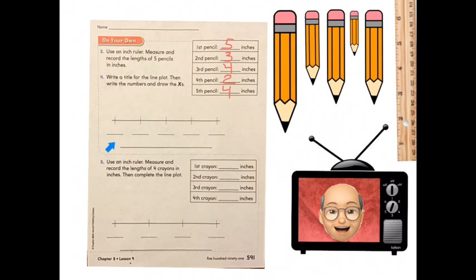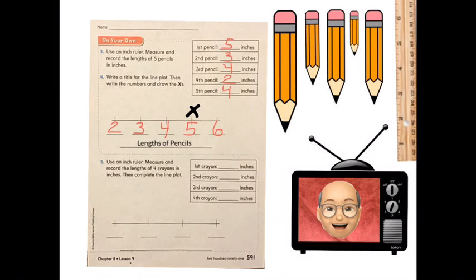So first, we'll give our line plot a title, which is Lengths of Pencils. And now let's go ahead and create the line plot. Well, the smallest number we have is two inches. Nothing smaller than that, so we'll start our line plot with two. And I think for this, we can just go ahead and go down the row there. Two, three, four, five, and we'll fill in the last one with six. Now let's go ahead and complete our line plot. Our first pencil was five inches long. We'll put an X over five. Then we had one that was three inches long, an X over three. Our third pencil was four inches long, an X over four. Fourth pencil, two inches long, X over two. And our last pencil was four inches long, so a second X over the four. And we've completed numbers three and four.